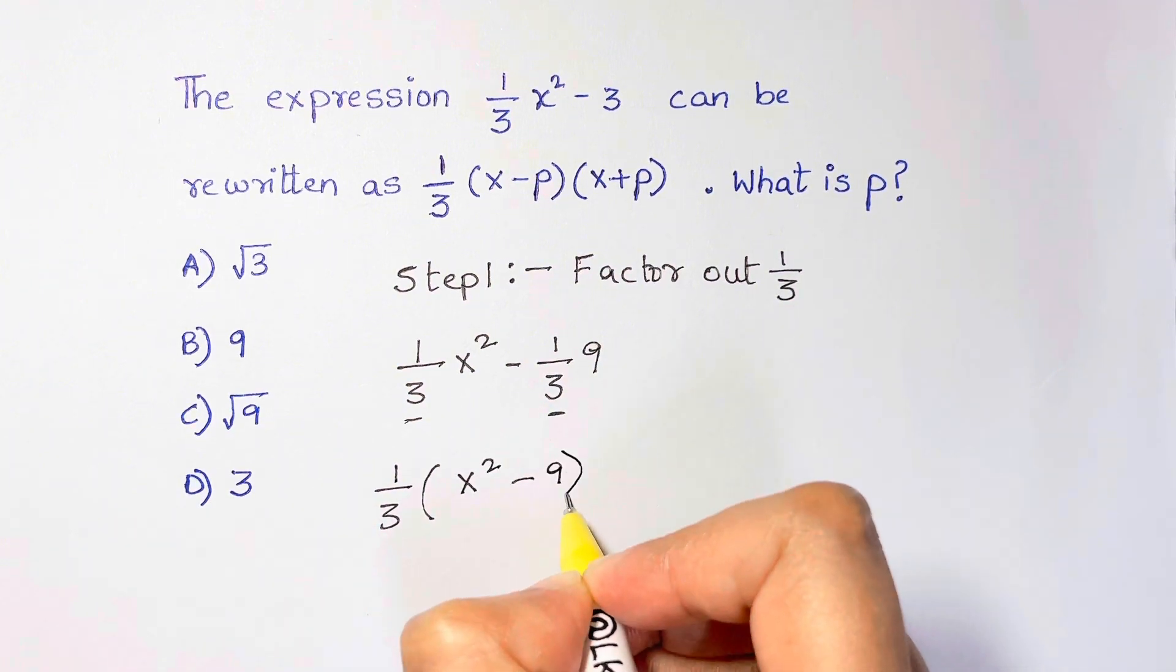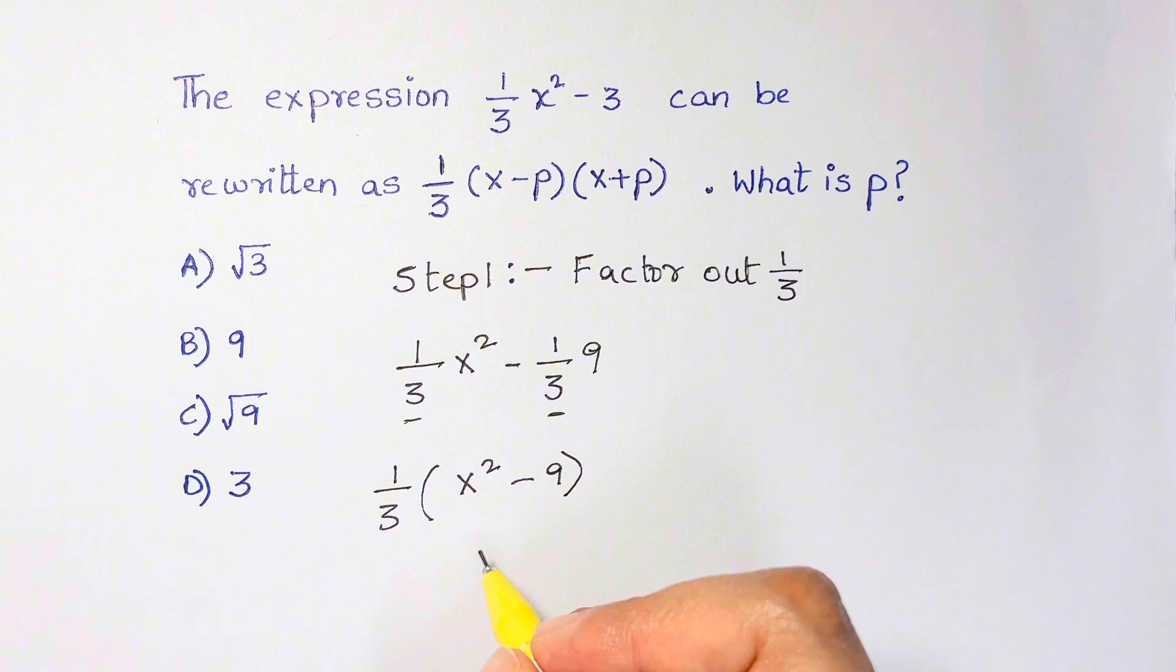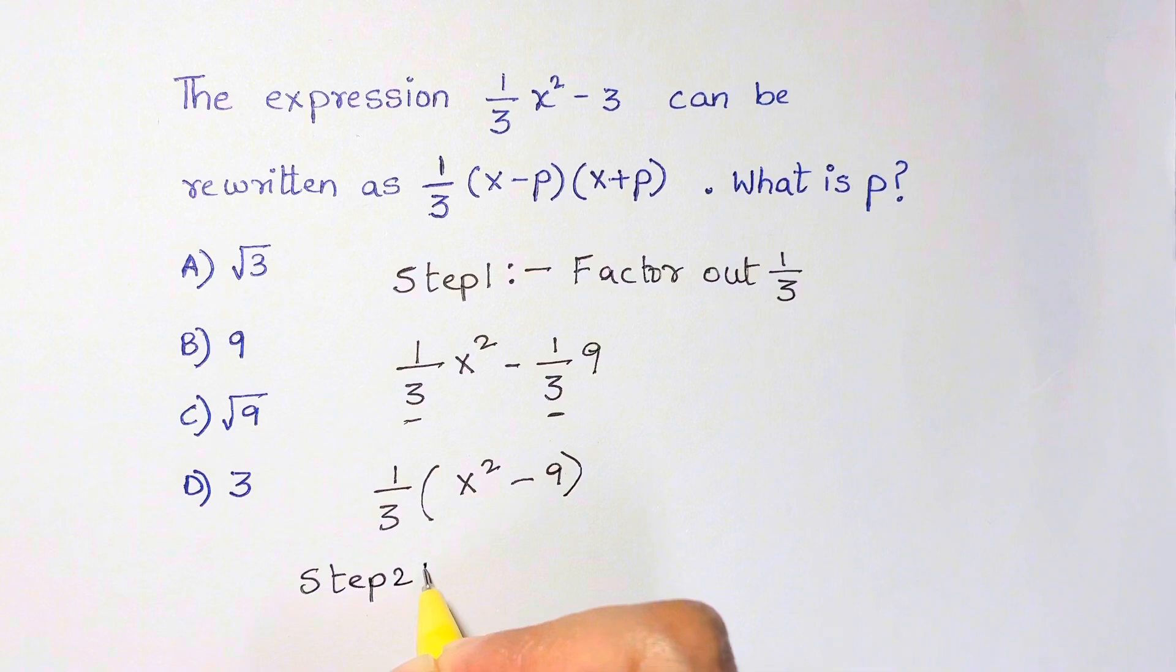Now we're going to the next step, which is applying quadratic identities. Step two is to apply quadratic identities.